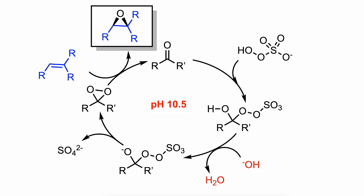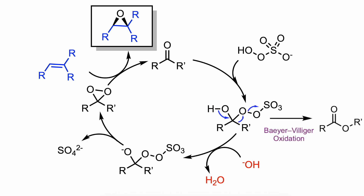The pH of the reaction medium has a crucial effect on the outcome of the reaction. At high pH, the oxidant decomposes rapidly, while at lower pH values, the catalyst is decomposed via Baeyer-Villiger oxidation. Besides, the epoxide products are less stable at lower pH values. At the optimum pH value of approximately 10.5, the epoxidation usually takes place with heightened enantiomeric excess at low catalyst loadings.